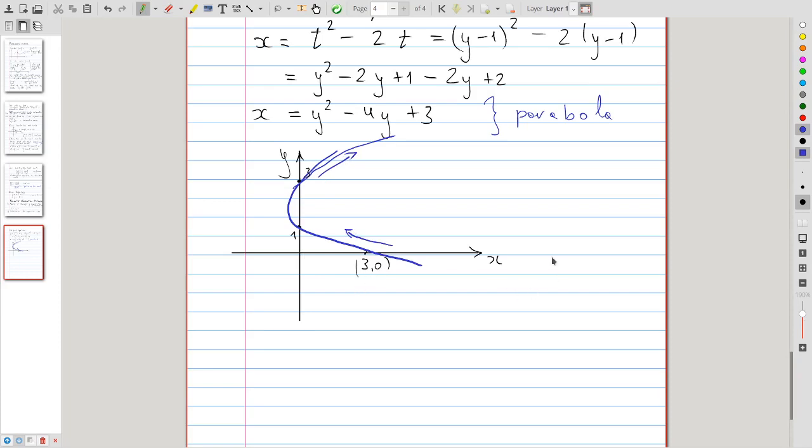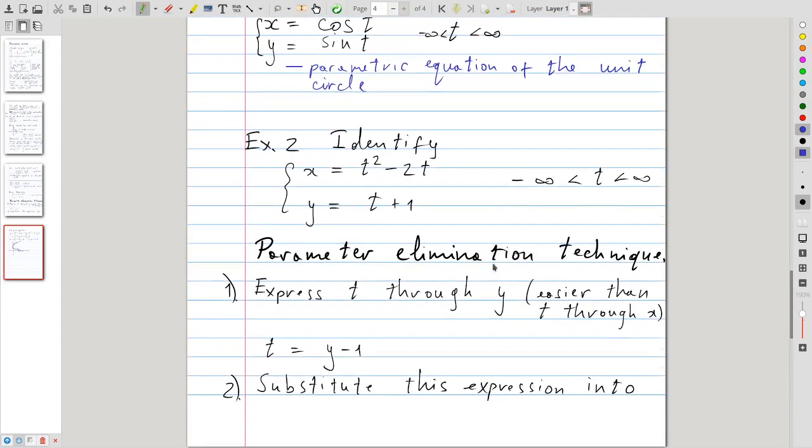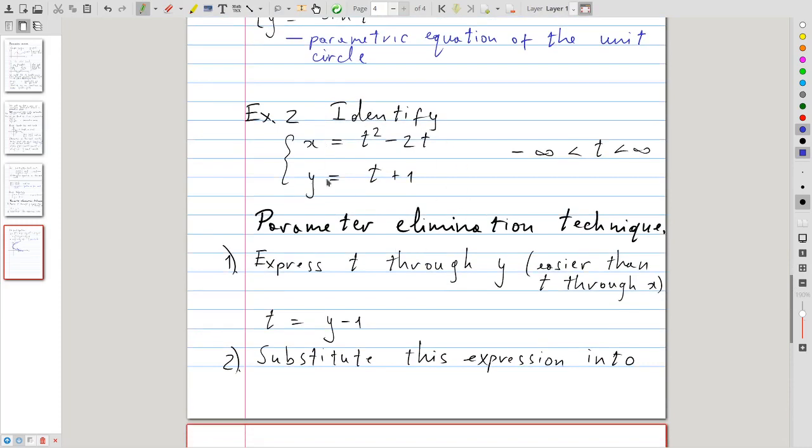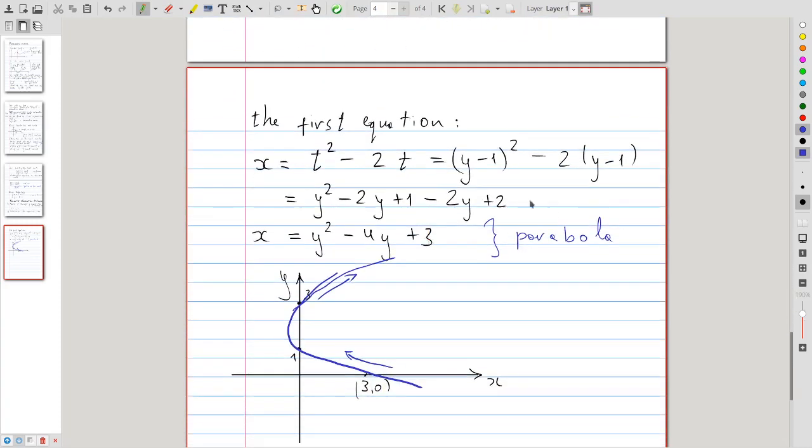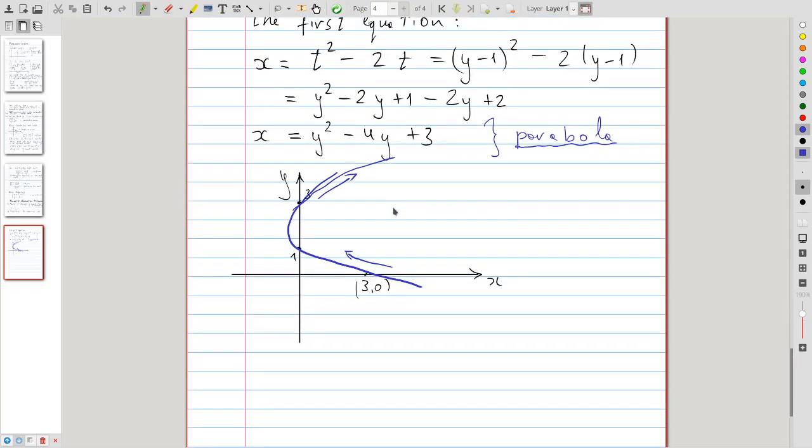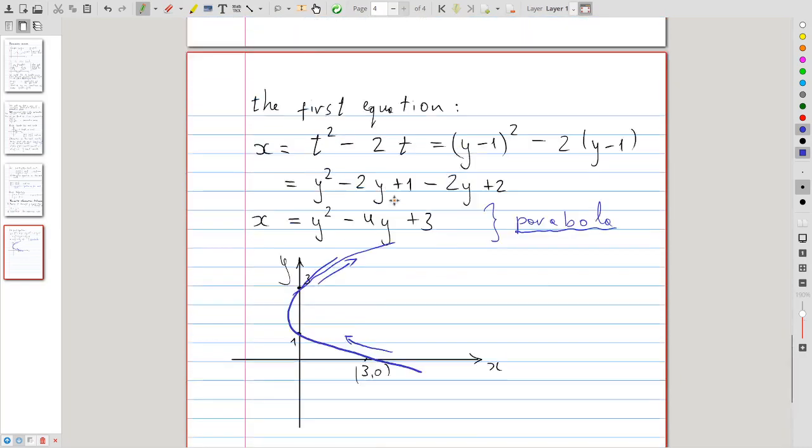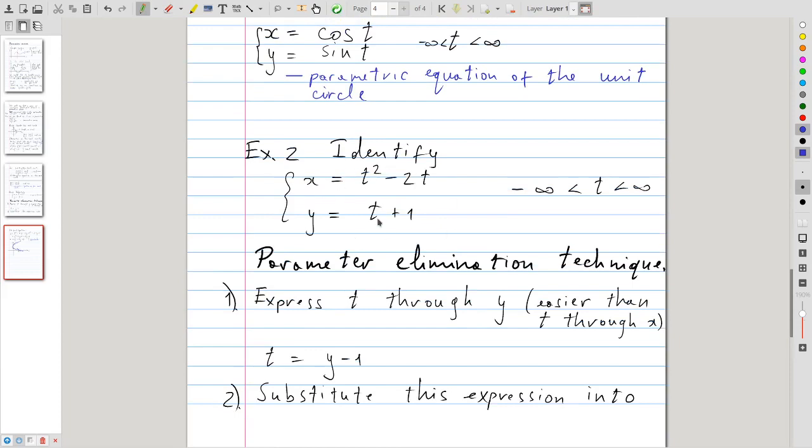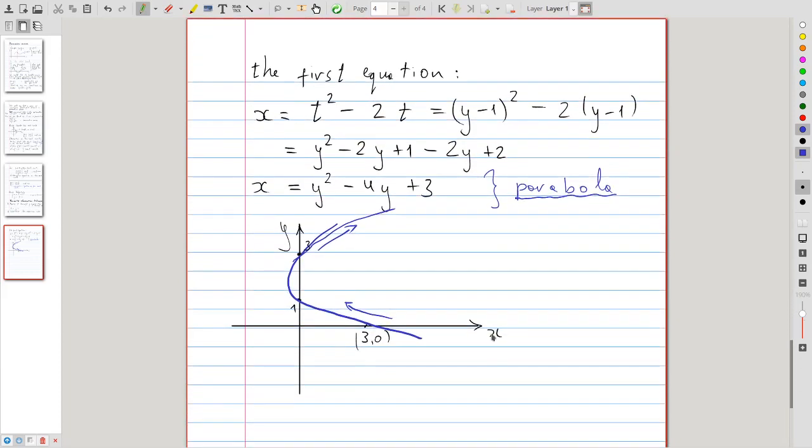And so we have successfully identified this curve given by a parametric equation. We have determined that it is a parabola, and we have also identified the direction of the motion of the particle that corresponds to this parametric equation. So there is this two-fold way to think of parametric equations. On the one hand, they define a curve. On the other, they describe a trajectory of a particle moving with time.